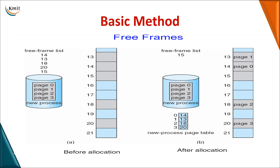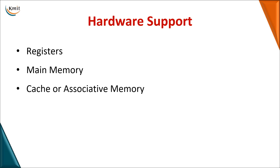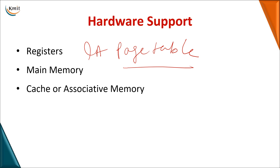We also need to track free frames. Assume a new process has 4 pages. Before allocation you have a list of available free frames. Page 0 is loaded into frame 14, page 1 into frame 13, page 2 into frame 18, and page 3 into frame 20. After allocation, only one frame remains free. This list of free frames is maintained by the OS. The page table plays a major role as the intermediary mapping logical addresses to physical addresses.